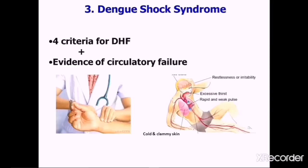The clinical case definition of dengue shock syndrome requires all four criteria for dengue hemorrhagic fever — fever, hemorrhagic manifestations, low platelet count, and objective evidence of leaky capillaries — plus evidence of circulatory failure, manifested by rapid and weak pulse, narrow pulse pressure, cold clammy skin, and altered mental status. Frank shock is direct evidence of circulatory failure. Pulse pressure is the difference between systolic and diastolic blood pressure; narrow pulse pressure is less than or equal to 20 mmHg.